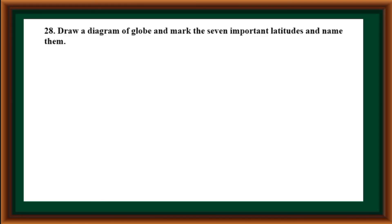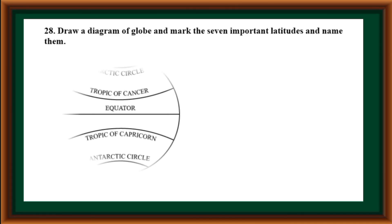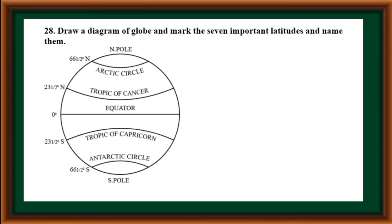Draw a diagram of the globe and mark the seven important latitudes and name them. Equator: 0°; Tropic of Cancer: 23.5° North; Arctic Circle: 66.5° North; North Pole: 90° North; Tropic of Capricorn: 23.5° South; Antarctic Circle: 66.5° South; South Pole: 90° South.